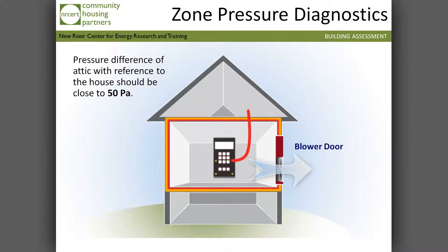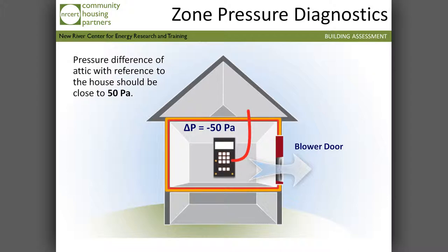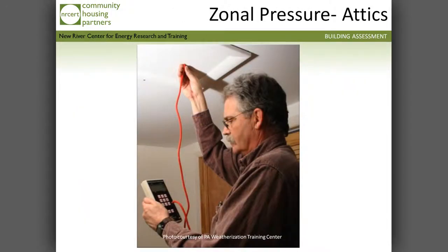Here's the test going into the attic. What number should we see here? 50, if it's tight — don't worry about it being negative or positive, it just depends on where you put that hose. Here's a sample of doing a test to the attic.